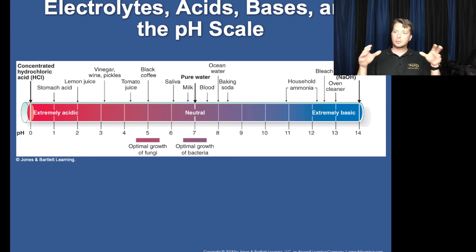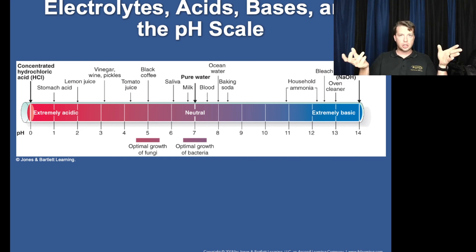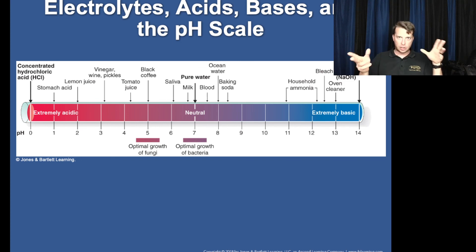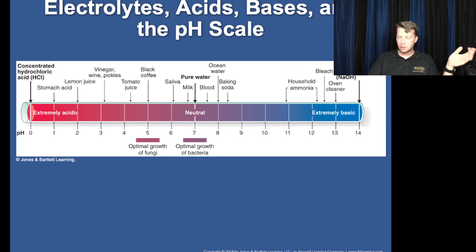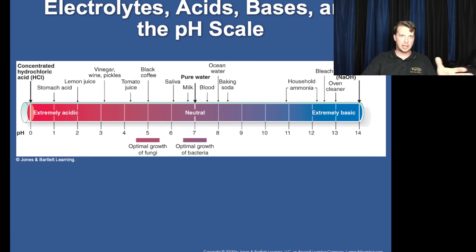Contact poison control — have 911 contact poison control. If you're on the job, they'll tell you to keep track of the pH of the chemicals and help you figure out how not to create an acid-base reaction in the stomach.